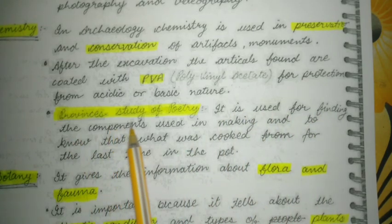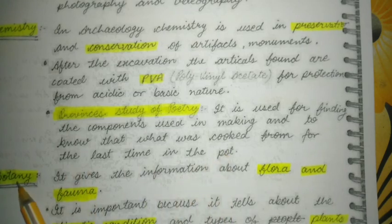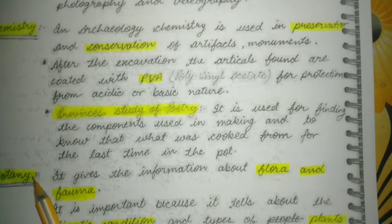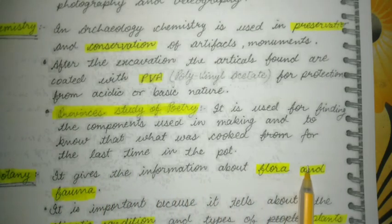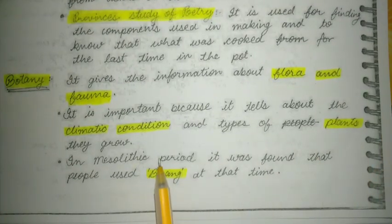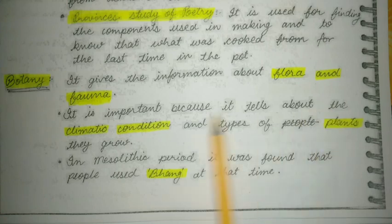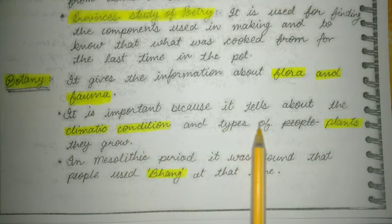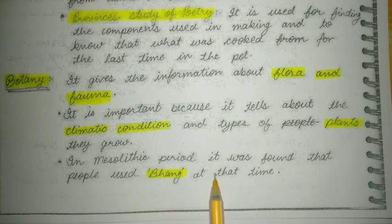Chemistry is also used for finding the components used in the making of artifacts. Now, botany — what is the relation of botany with archaeology? It gives information about flora and fauna. It is important because it tells about the climatic conditions and types of plants that grew in a given period. In the Mesolithic period, evidence of plant use has been found.